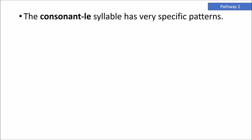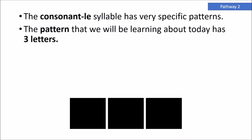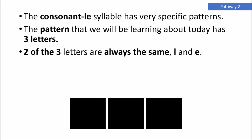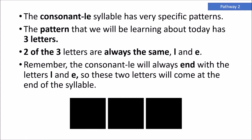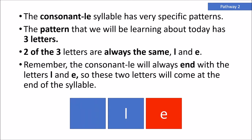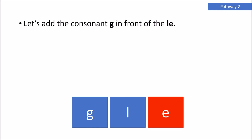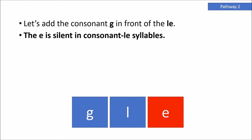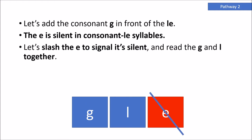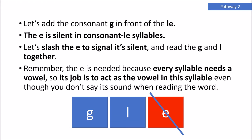The consonant LE syllable has very specific patterns. The pattern we will be learning about today has three letters, so you will see three tiles at the bottom of the screen. Two of the three letters are always the same: L and E. The consonant LE will always end with the letters L and E. The E is silent in consonant LE syllables. Let's slash the E to signal it's silent and read the G and L together — 'gl.' Remember, the E is needed because every syllable needs a vowel, so its job is to act as the vowel in this syllable even though you don't say its sound.